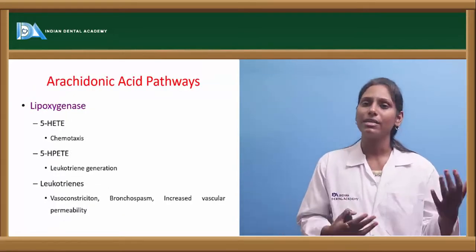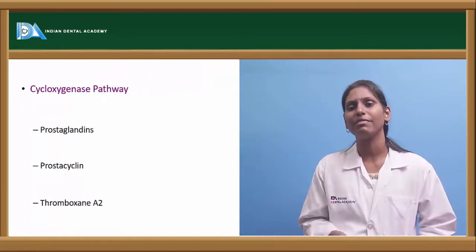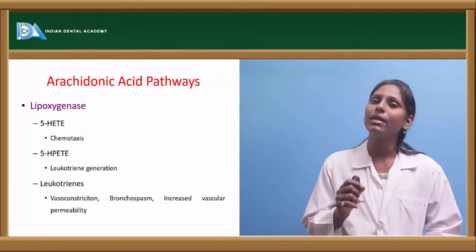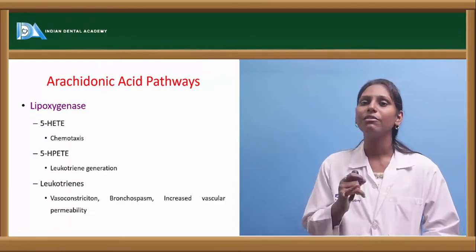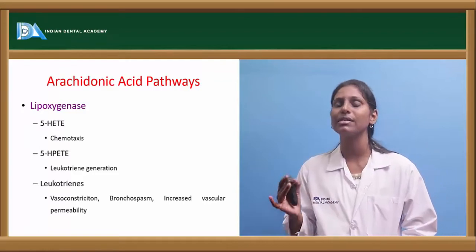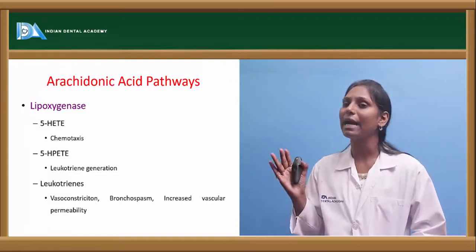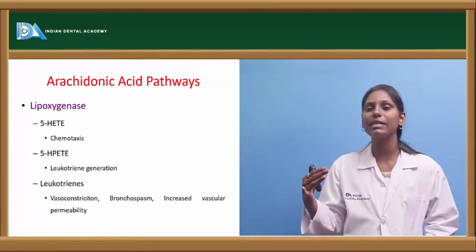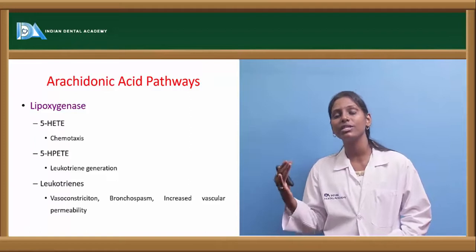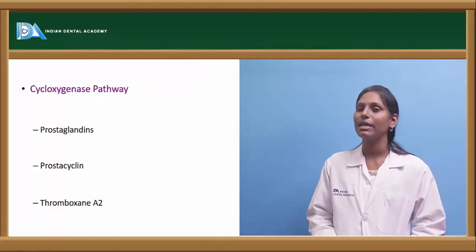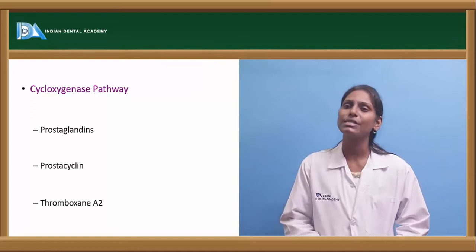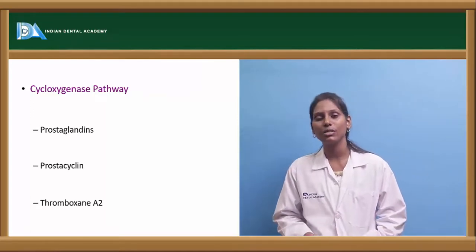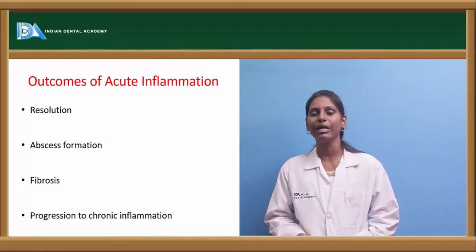In the arachidonic acid pathways, the lipoxygenase pathway produces 5-HETE (involved in chemotaxis), 5-HPETE (involved in leukotriene generation), and leukotrienes, which cause vasoconstriction, bronchospasm, and increased vascular permeability. The cyclooxygenase pathway produces prostaglandins, prostacyclins, and thromboxane A2, all acting as chemical mediators of inflammation.